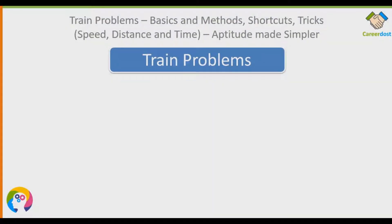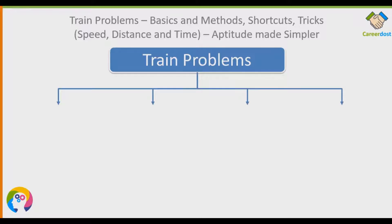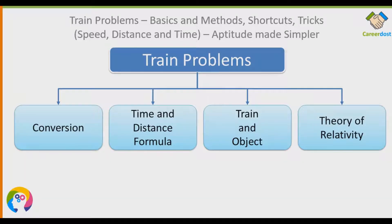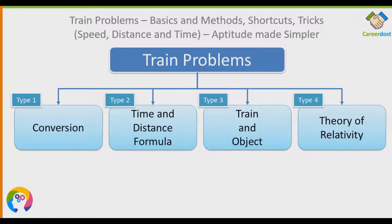In any aptitude exam, you will find at least one train problem. Today I will tell you the four types of train problems you need to know. Anything apart from this is not necessarily part of the exam. The four types are: Type 1 — Conversion, Type 2 — Time and Distance Formula, Type 3 — Train and Object, and Type 4 — Theory of Relativity.